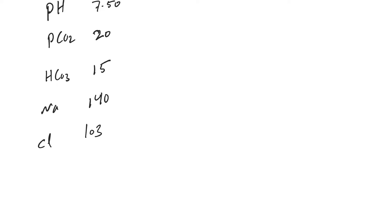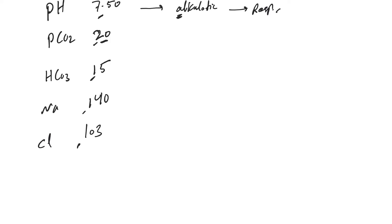So we have this ABG: pH 7.5, PCO2 of 20, bicarb of 15, sodium 140, chloride 103. The pH is alkalotic. This is primarily explained by the lower CO2, not the low bicarb. So mainly we're dealing with primary respiratory alkalosis.